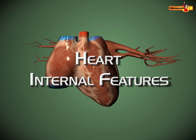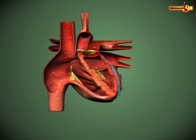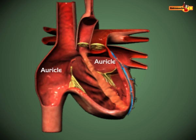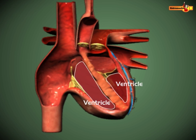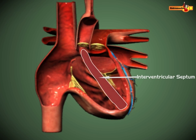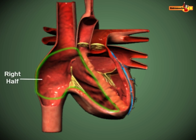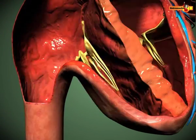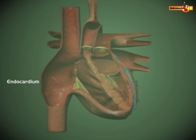Let us now take a look at the internal structure of the heart. The heart has four completely divided chambers: there are two receiving chambers or auricles, and two pumping chambers or ventricles. A muscular septum divides the heart internally into a left and a right half. In the right half, deoxygenated blood flows, while simultaneously in the left half, oxygenated blood flows.